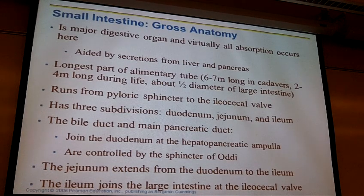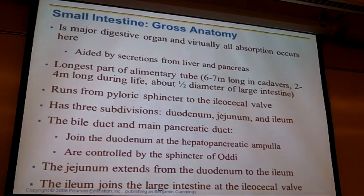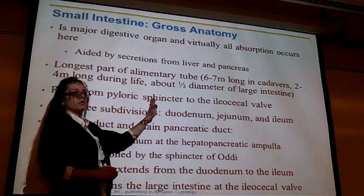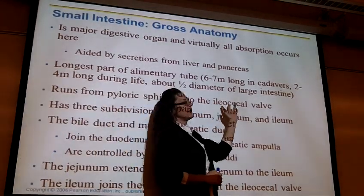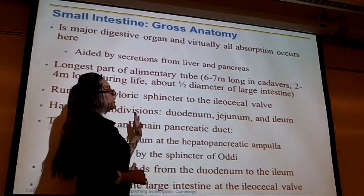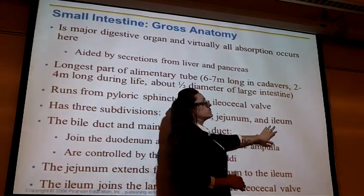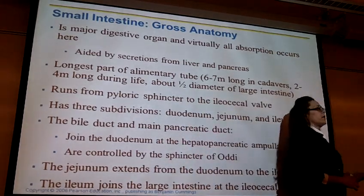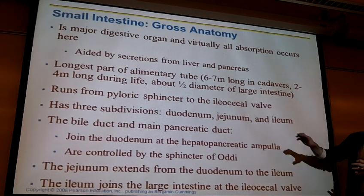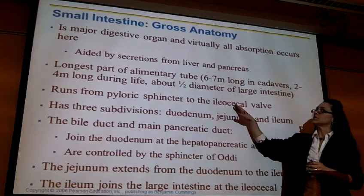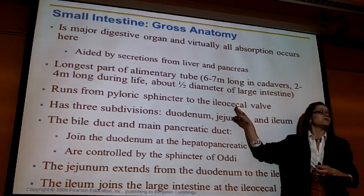The small intestine is actually longer than the large intestine — it's called 'small' because of its smaller diameter, not length. It runs from the pyloric sphincter to the ileocecal valve and has three parts: the duodenum, jejunum, and ileum. The ileocecal valve sits between the ileum and the first part of the large intestine, the cecum.